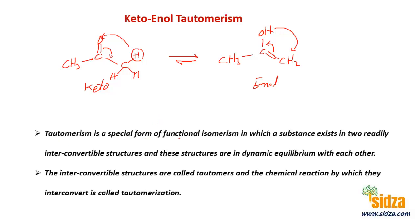Tautomerism is a special form of functional isomerism, because here we have a ketonic group and an enol group — these are different functional groups. In tautomerism, a substance exists in two readily interconvertible structures, and these structures are in dynamic equilibrium with each other. Tautomerism is therefore a special form of functional isomerism where there is an equilibrium between two functional isomers of a compound.